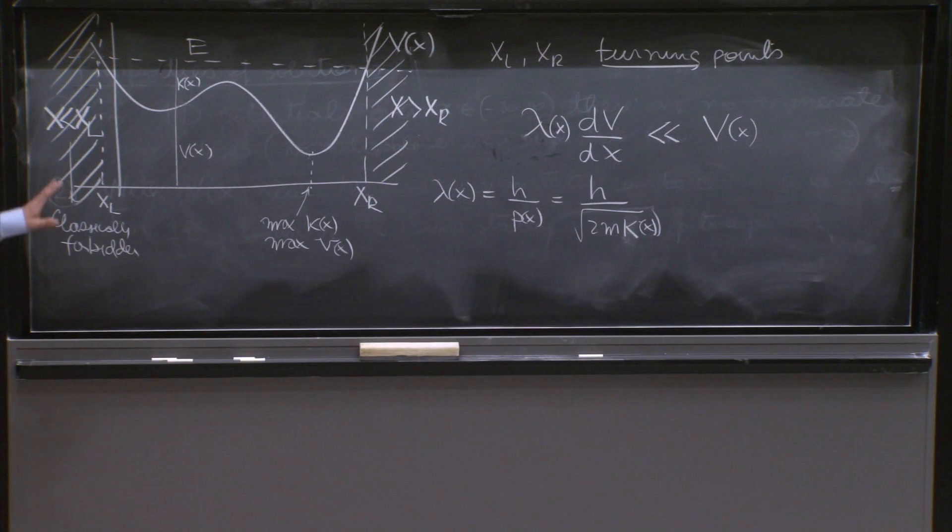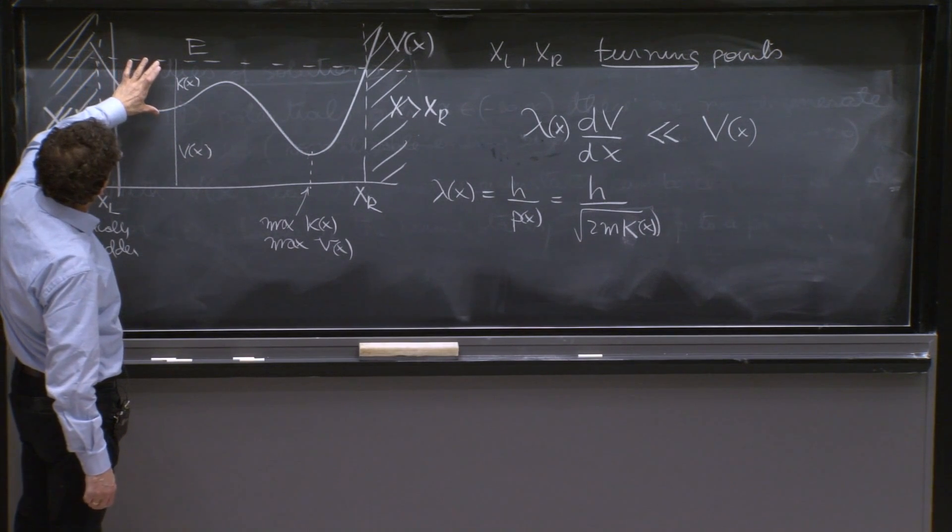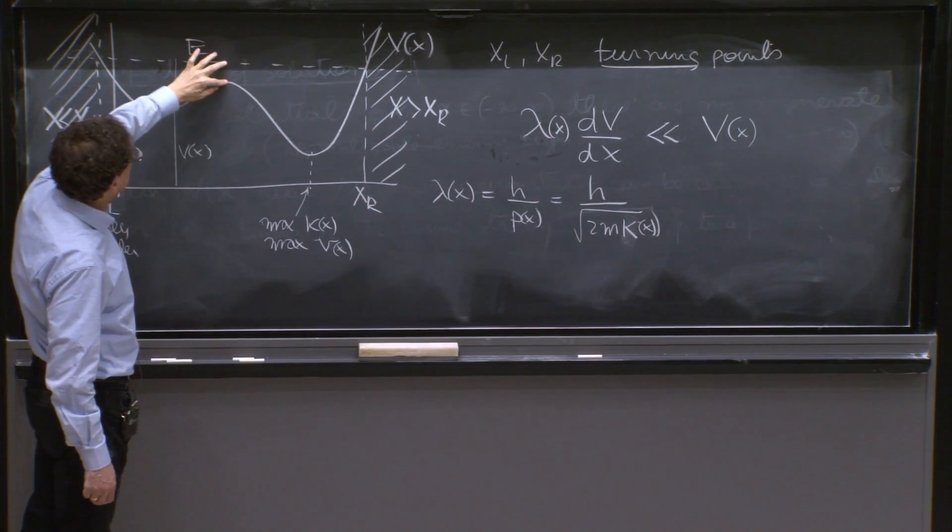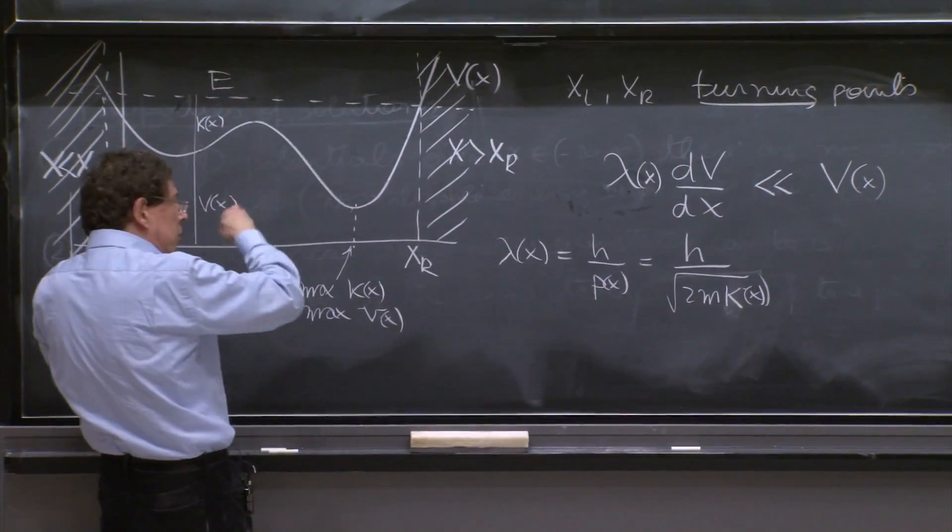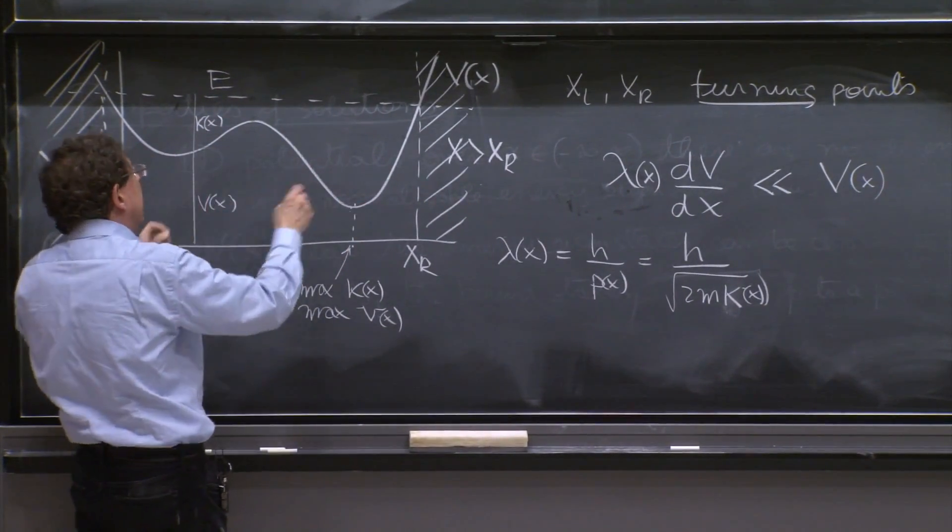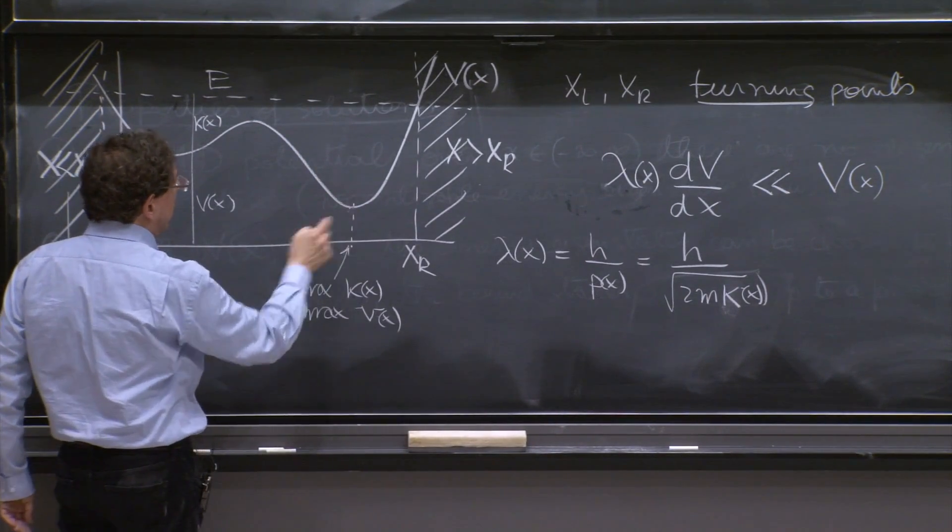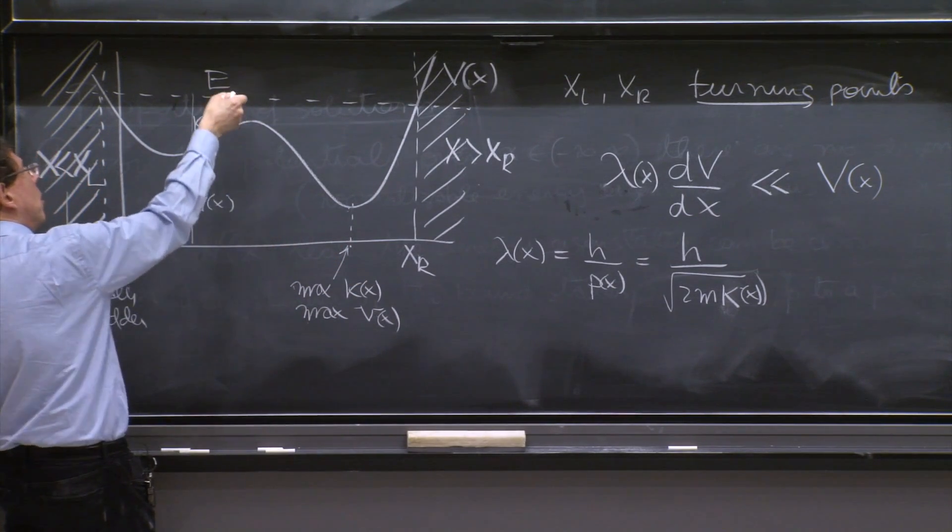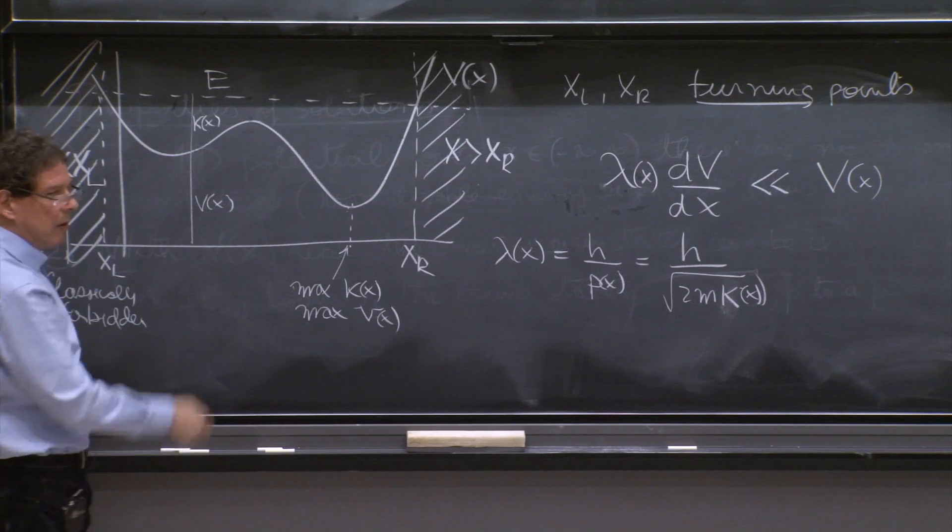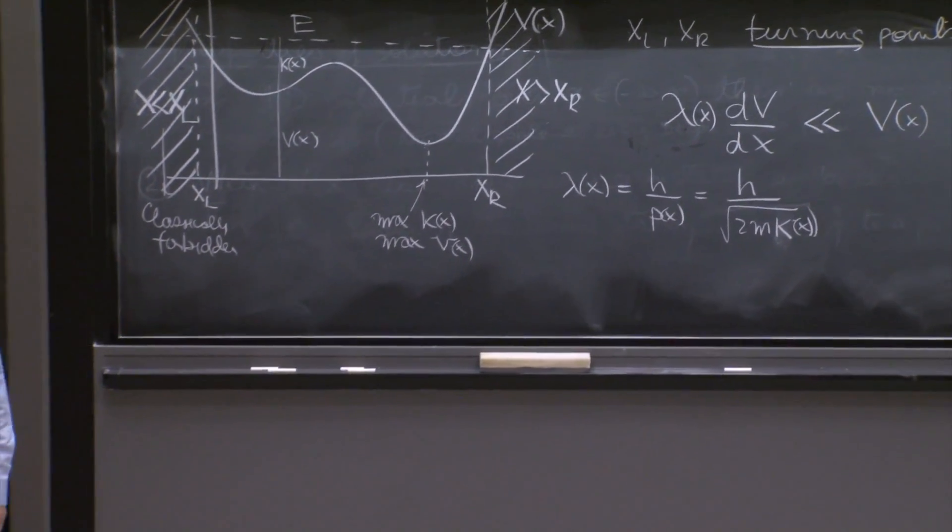OK, so the idea is that you can roughly say, OK, the de Broglie wavelength here is of some value here. The momentum is small, the de Broglie wavelength is large, and so when you draw things, you adjust that. You say, OK, here the momentum is large, therefore the de Broglie wavelength is small. So you write a short wavelength thing, and then it becomes longer wavelength, and then shorter. And you just try to get some insight into how this thing looks.